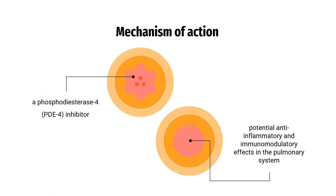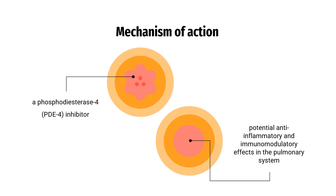Mechanism of Action: Roflomilast is a phosphodiesterase 4, PDE4, inhibitor which appears to have potential anti-inflammatory and immunomodulatory effects in the pulmonary system. It is thought that increased levels of intracellular cyclic AMP are responsible for the therapeutic actions of Roflomilast.